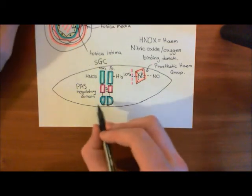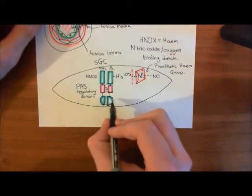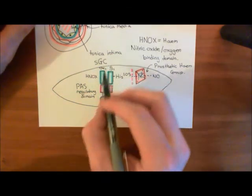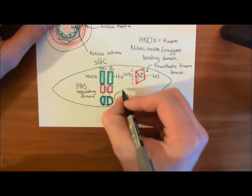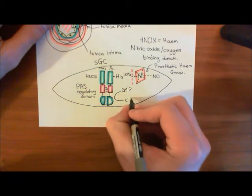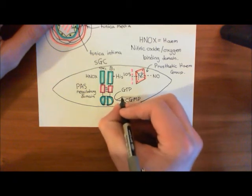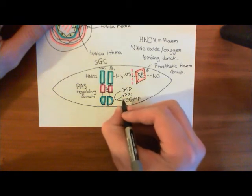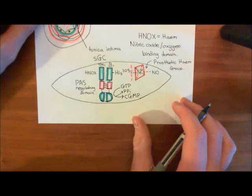Okay, so the catalytic portion of the actual enzyme portion down here, made up of these two catalytic domains of each one of these subunits, is now going to start converting guanosine triphosphate into cyclic guanosine monophosphate, cyclic GMP, and also the other product that you get from this conversion is pyrophosphate, often denoted PPI. That's just two phosphate groups linked together.